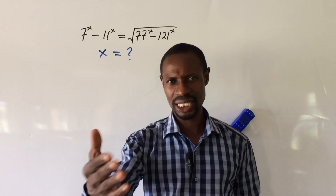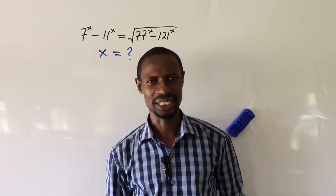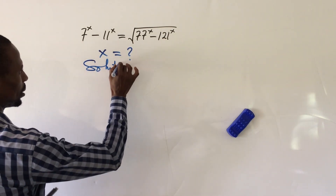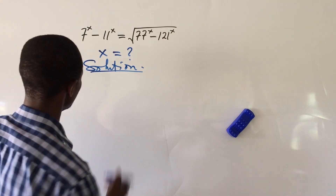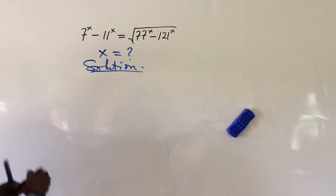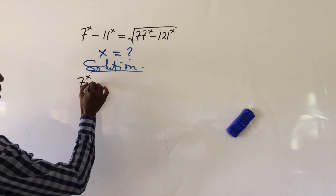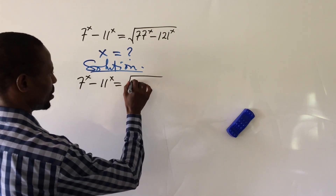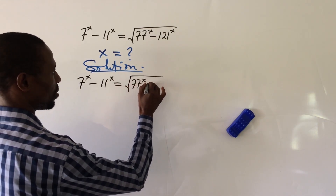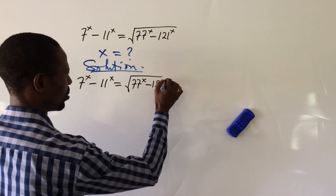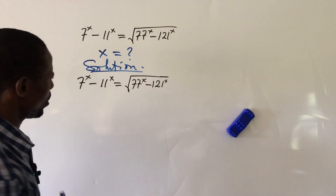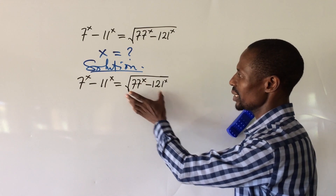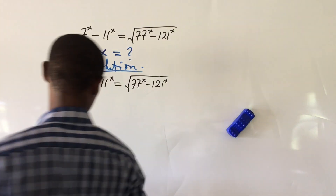So sit back as we dive into this challenge. We pull down the question: 7 to the power of x minus 11 to the power of x equals the square root of 77 to the power of x minus 121 to the power of x. To handle this radical, we take the square of both sides.